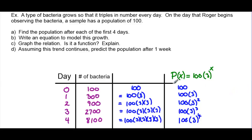How does this work for the first day, before any growth, when we had an initial population of 100 with no times 3? In fact, if we follow our rule and put day 0, then 3 to the exponent 0 equals 1. So 1 times 100 is 100, and this whole pattern makes sense.